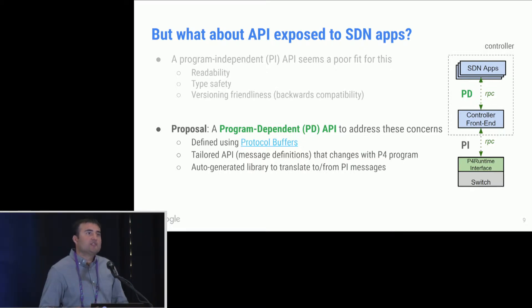Of course, once the schema changes and the SDN apps write flow entries using this schema, eventually they would have to be translated into the PI messages to be fed to the switch over the P4 runtime, using the P4 runtime interface. And for that, we also propose to auto-generate a library to translate from PD messages to PI messages, as well as, on the way back, if the SDN app is trying to read a flow entry from the switch, the controller front end is going to get a PI message from the switch, and then that would have to be translated back to a PD message.